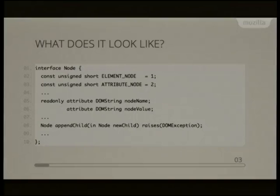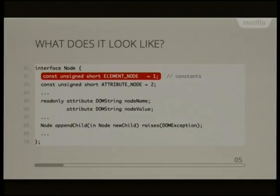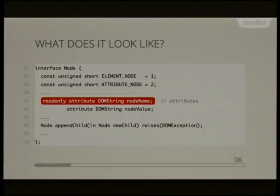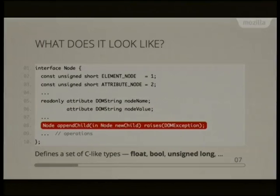Here's a snippet from the DOM specification defining the node interface. The four main parts are: the interface node declaration which introduces the name of the interface; constants that have a particular type, value, and name; attributes which correspond to properties or fields on the object that you can get and set; and operations, which is IDL speak for methods on the object.